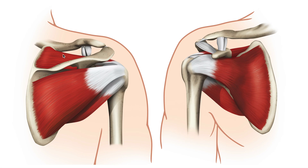On the superior aspect of the scapula, we have the supraspinatus — 'supra' being above, and 'spinatus' being above the spine of the scapula. Underneath, we have the infraspinatus. 'Infra' being below the spine of the scapula. Now right here on the lateral border of the scapula, we have the teres minor.